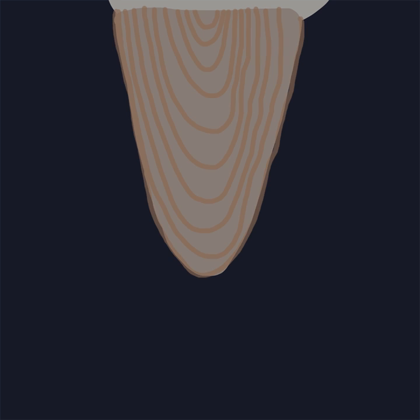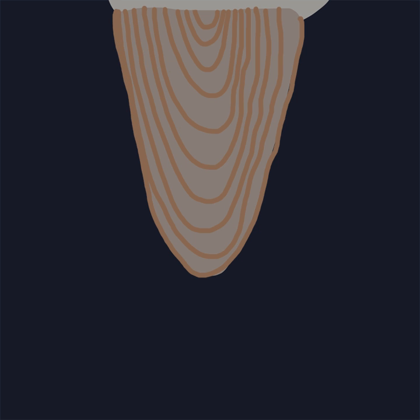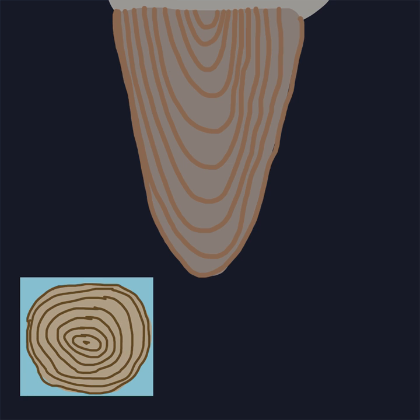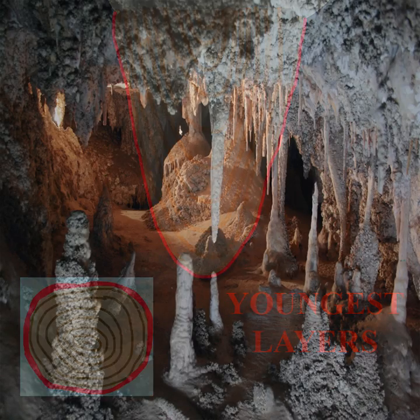Let's take a look at a vertical cross-section of a speleothem. Through their formation, speleothems form in layers over time, with thicker sections representing heavier rainfall seasons. Does this growth method sound familiar? This is how trees grow. The center layer of the tree and the innermost layer of the speleothem are the oldest layers, while the outer layers of both are the youngest.